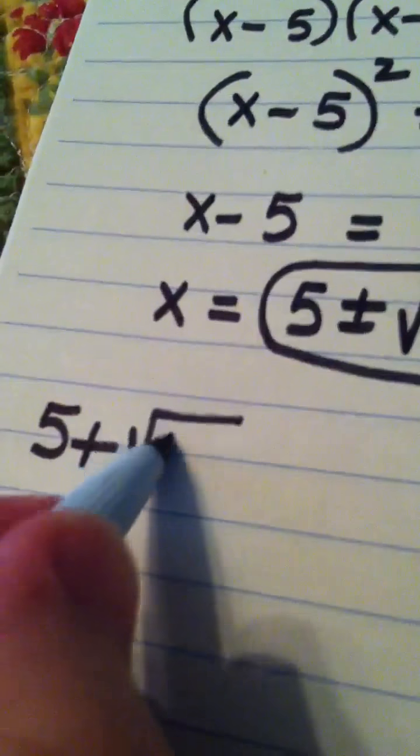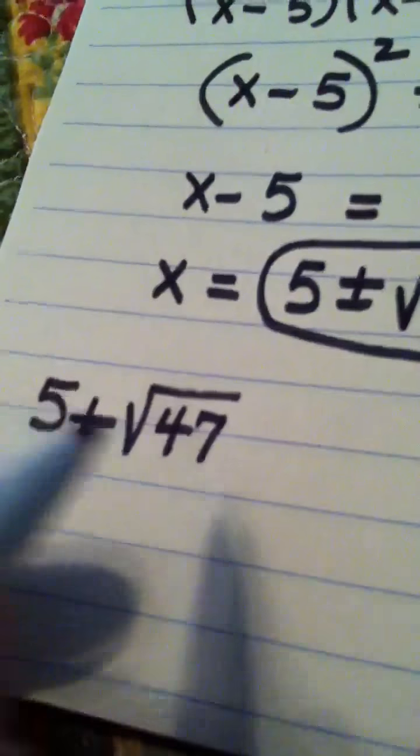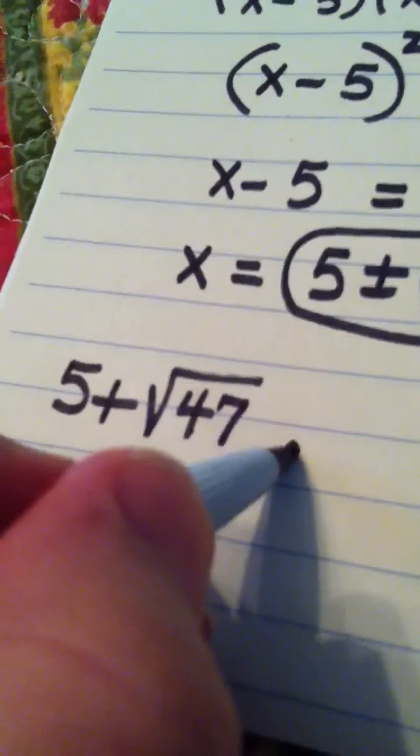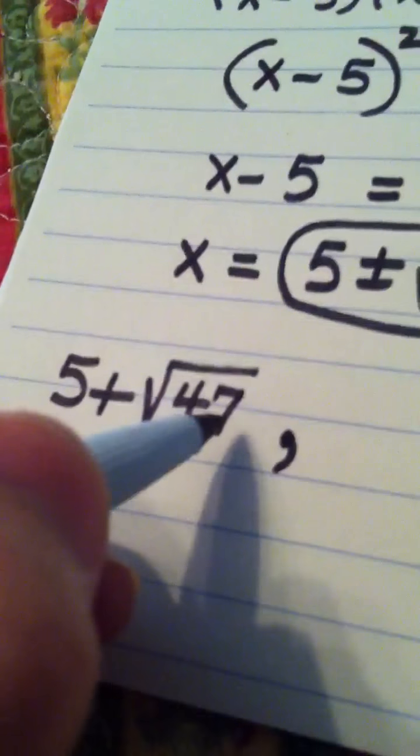to write your answer separately with a comma. If they do, one answer would be five plus the square root of 47.